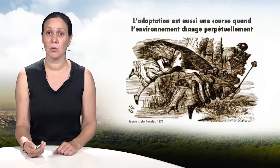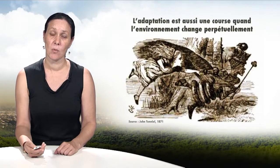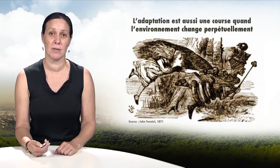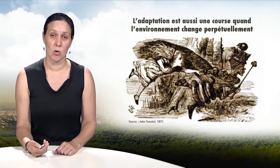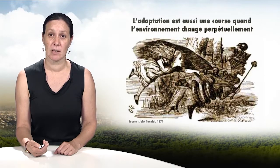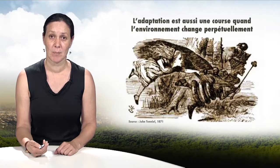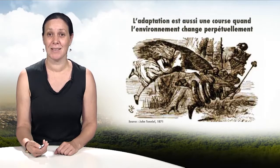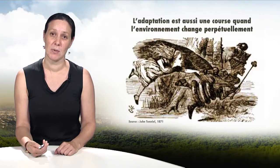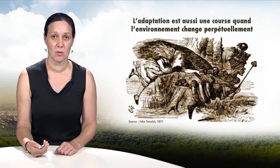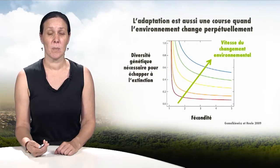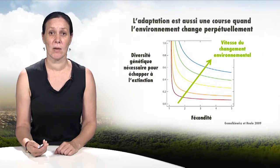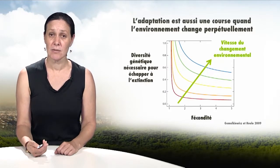The increase in temperatures correlated with climate change means species face other adaptive challenges. In order to persist locally, a population must adapt permanently to a perpetually changing environment — like Alice in Wonderland, who needs to run to stay in the same place. In this context, a population must evolve quickly in order to persist.